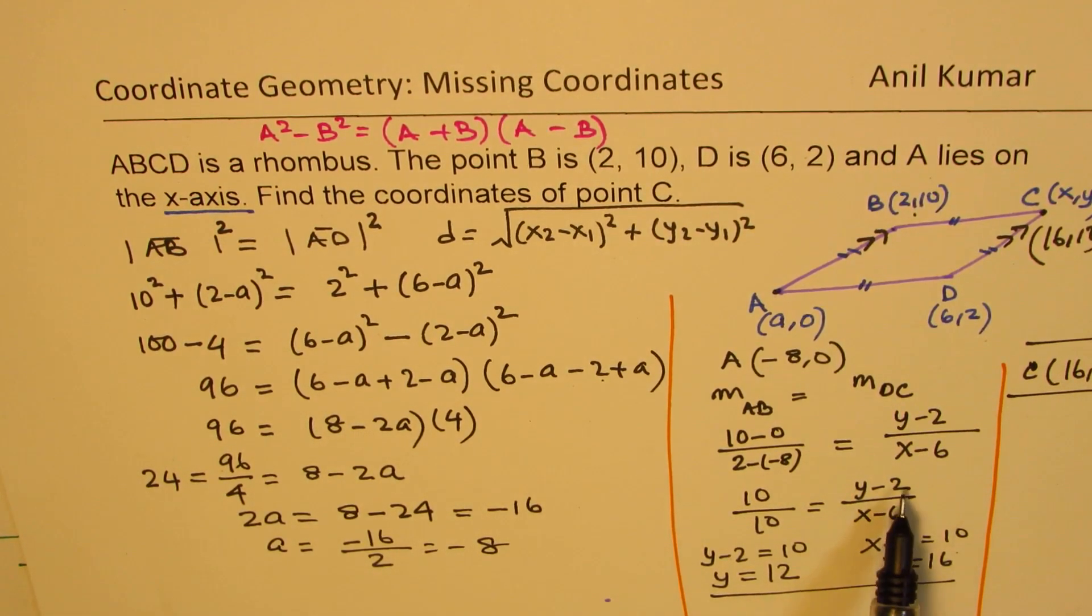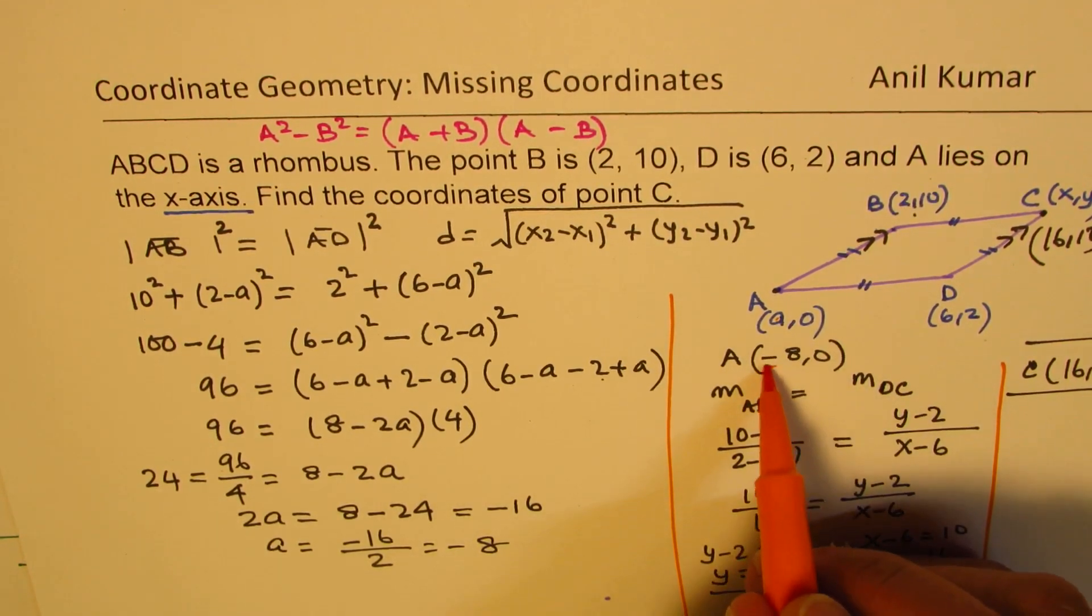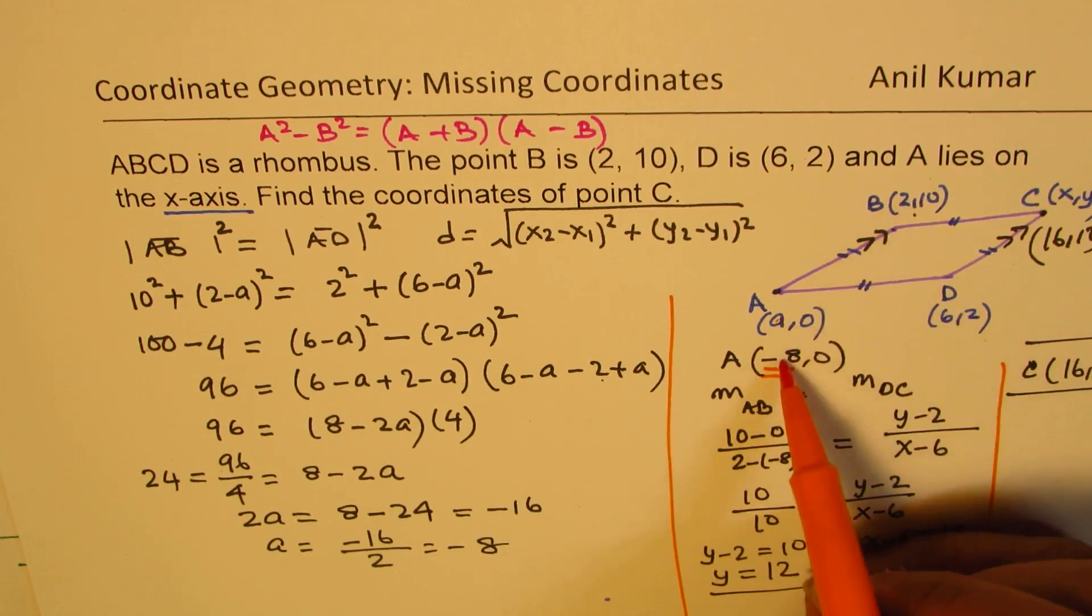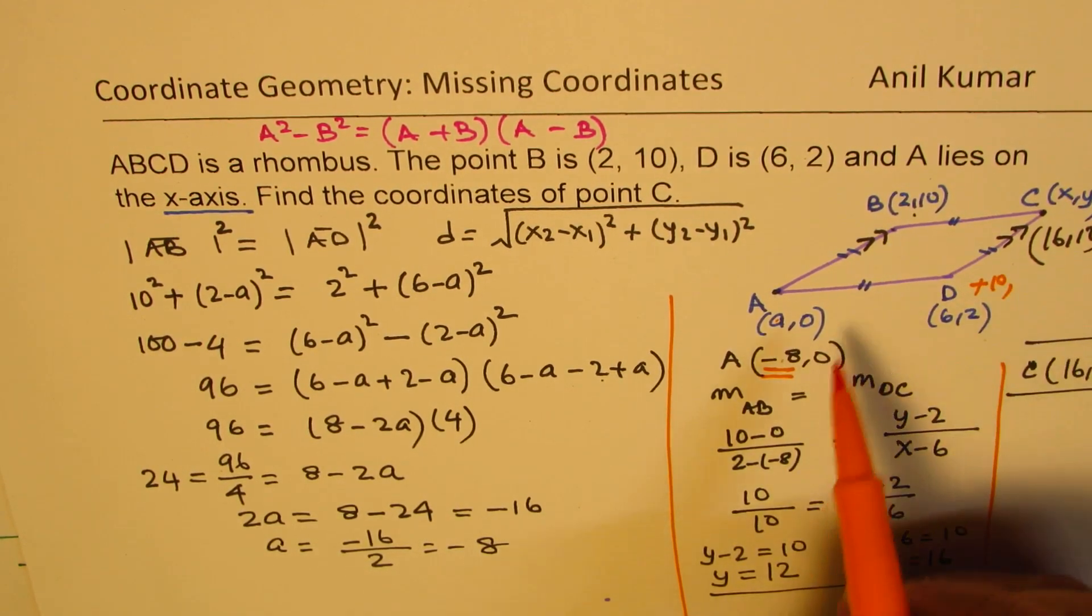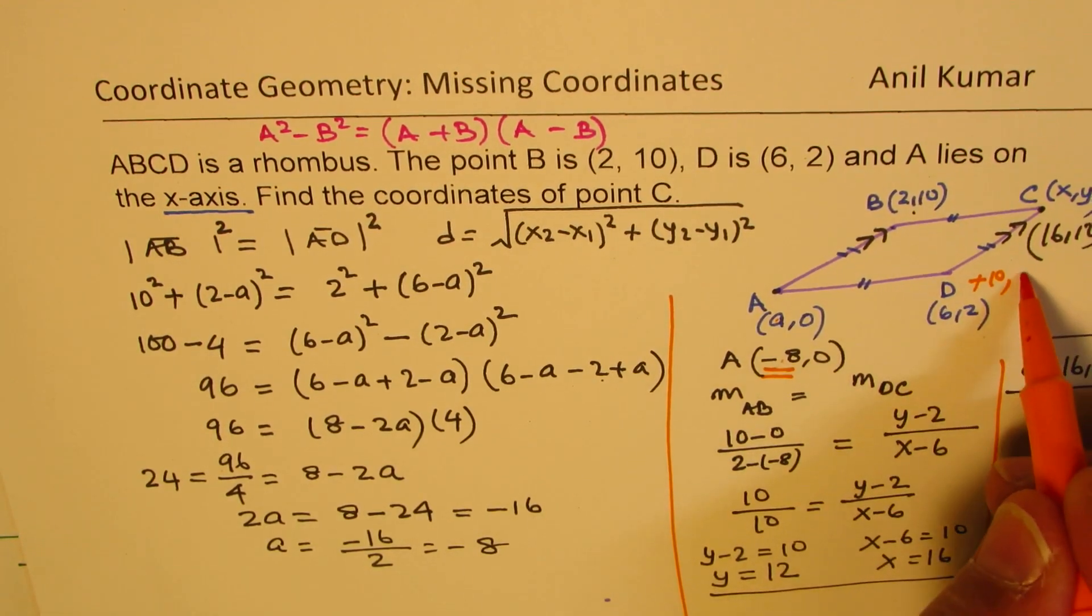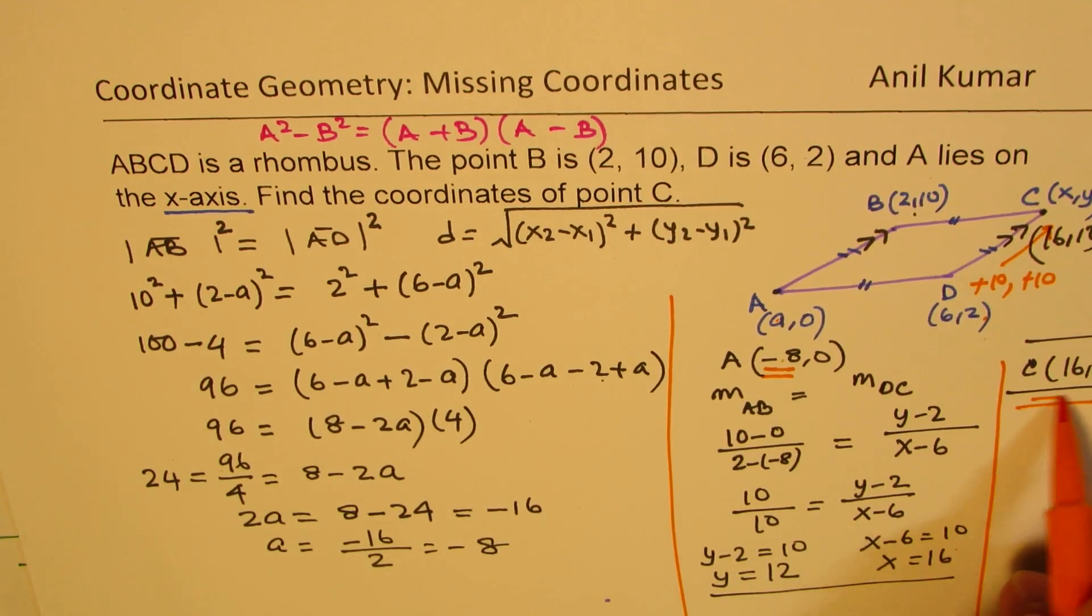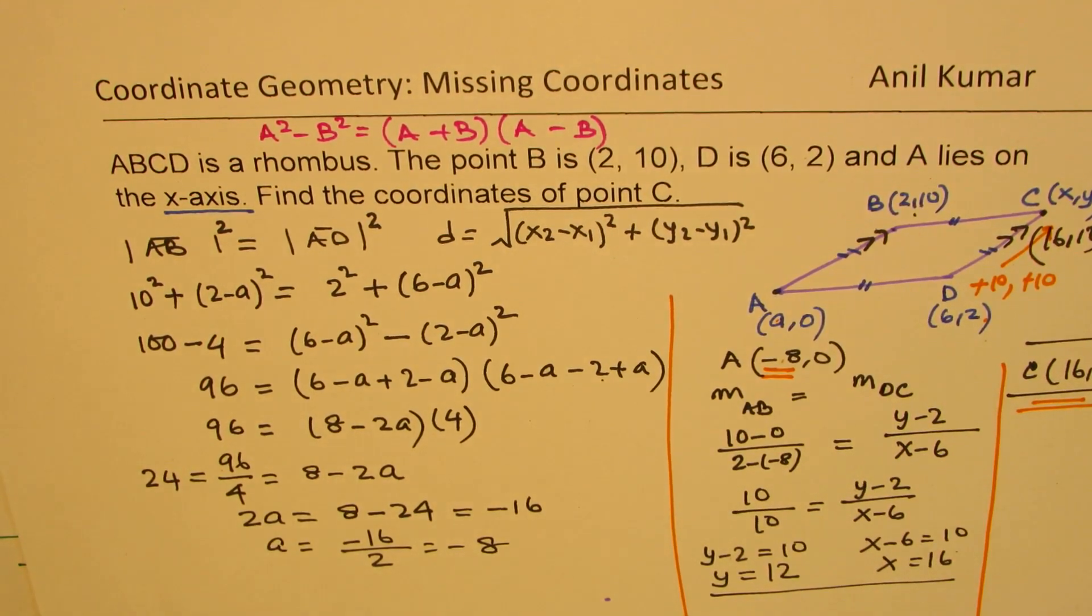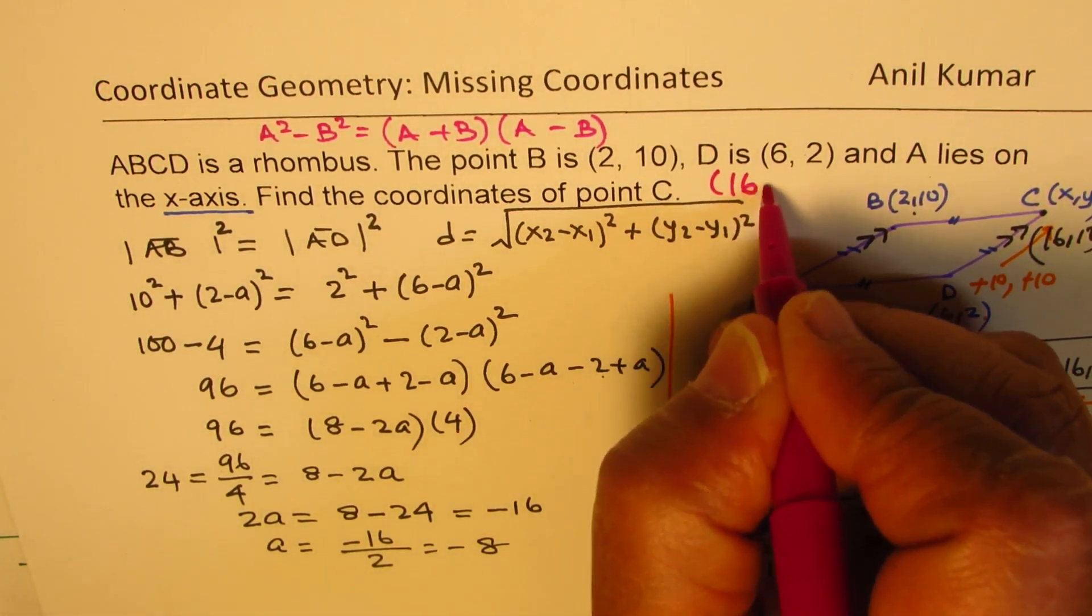So we just equated the numerators and denominators and got our answer. Does it make sense to you? So from -8 to 2, we're going 10 more. So 6 plus 10. And as far as the y-values, they are also 10 more. So plus 10 gives us this result. Do you see that? Which is very clear. So that is how we actually find the solution. So we say that coordinates of point C are (16,12).